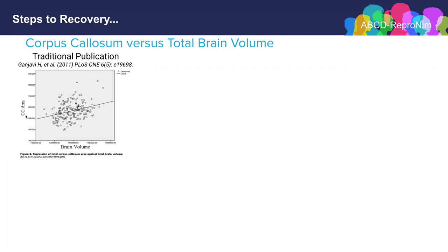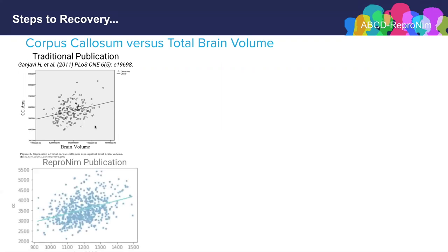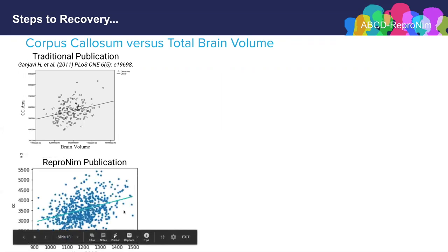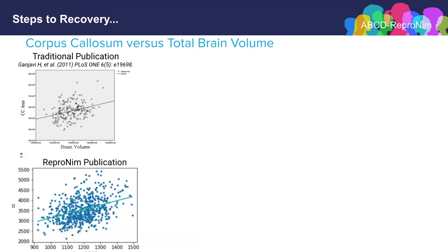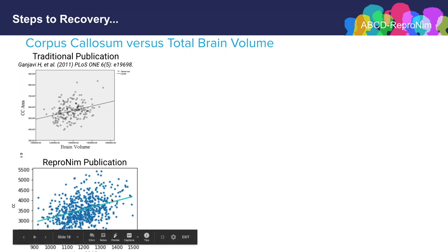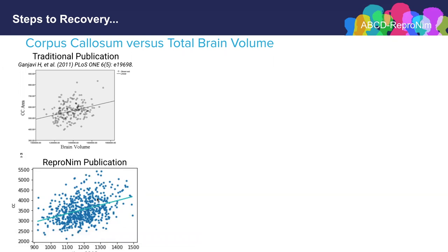Here we see the original published report — corpus callosum area versus total brain volume — and a nice correlation published as a graphic in a PDF document. The text reports what tool they used and what the statistics are, but it's all at a very descriptive level. In the ReproNim way, a ReproNim publication looks very similar — using FreeSurfer to develop corpus callosum volumes applied to the ABIDE and the ADHD-200 datasets, where typical corpus callosum volume as a function of brain volume can be explored. This is different data than the original, but it confirms and generalizes that original finding of brain volume and corpus callosum being associated.